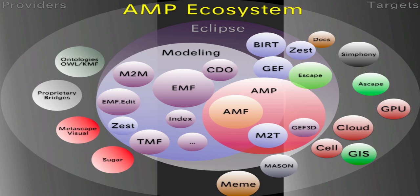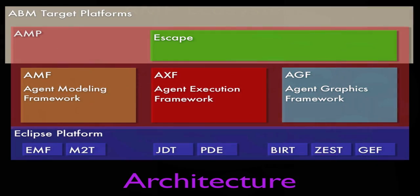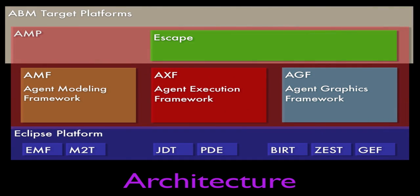We have model-to-text, which is Expand, and we have TMF, which is the Xtext component. Those are probably, outside of EMF, the two major contributors to the EMF effort. Using all of those pieces, people can generate agent models for anything they want, and you can create and design agent-based models using anything you want. So that's AMP. In future screencasts, we'll be looking at and going into the EMF model structure in depth, and we've talked about why agent-based modeling is an important thing to do.